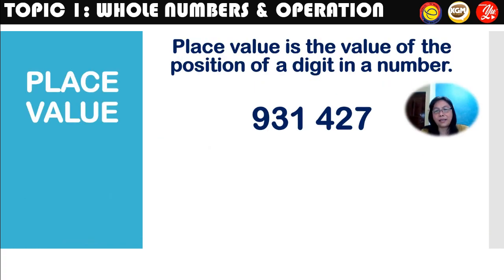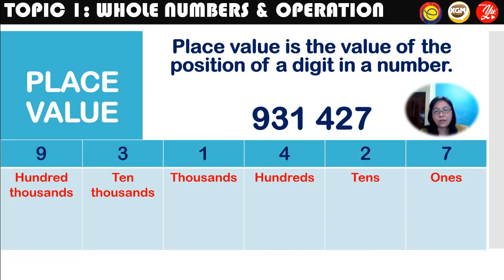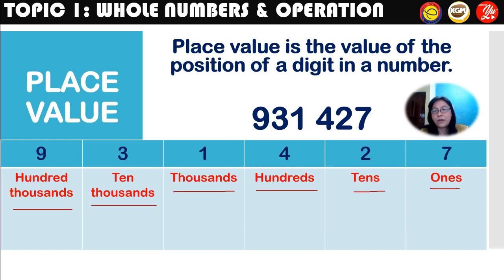Let's look at place value. Place value is the value of the position of a digit in a number. Let's look at this number: 931,427. The place value of 7 is ones, 2 is tens, 4 is hundreds, 1 is thousands, 3 is ten thousands, and 9 is hundred thousands. For place value, we only write words or alphabets — no digits.